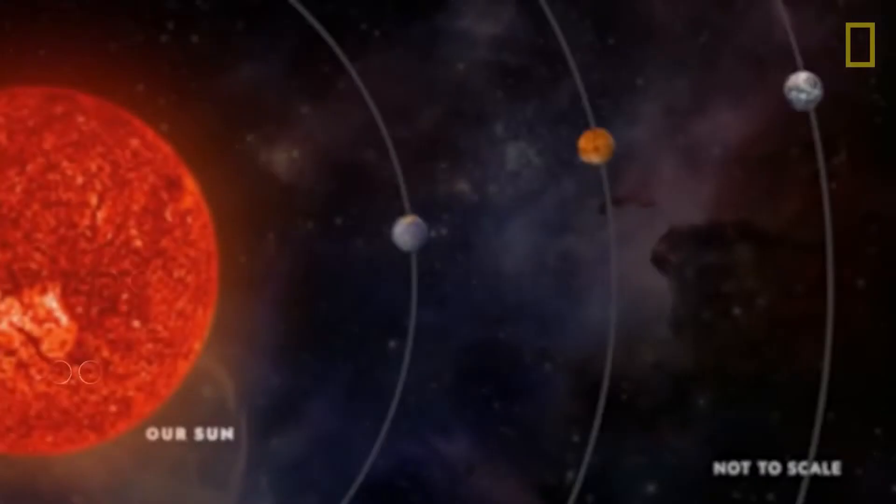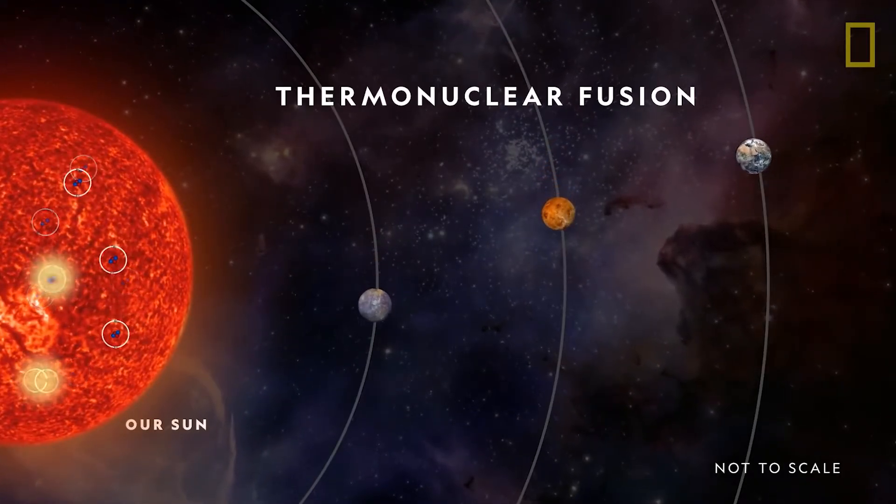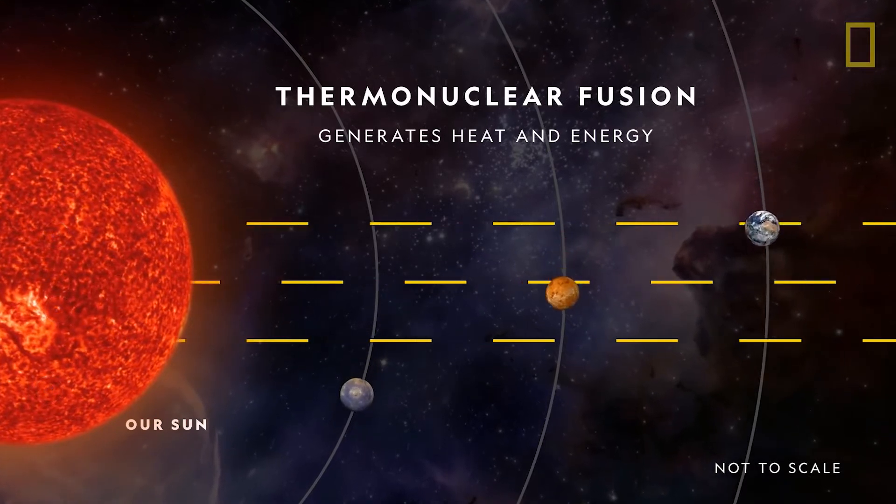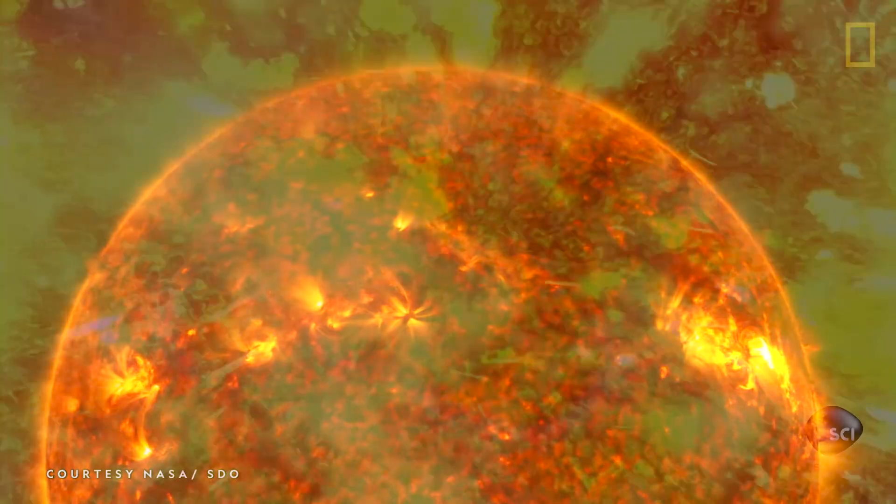Depending on the mass of the protostar, the collapsing gas and dust burns hotter, eventually reaching temperatures sufficient to fuse hydrogen into helium. Fusion produces an outward pressure that balances with the inward pressure caused by gravity, stabilizing the star.